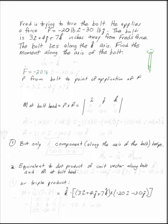So F is minus 20 pounds in the I direction minus 30 pounds in the J direction. We know that the unit vector along the bolt, so along our axis, is going to be K. The R were given in the problem.